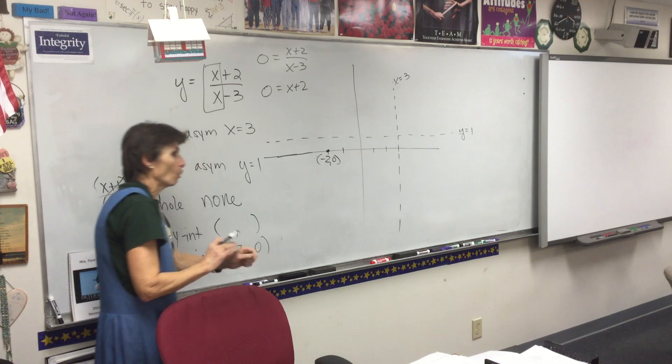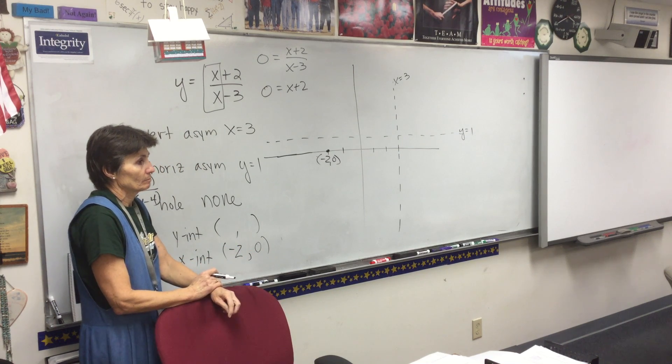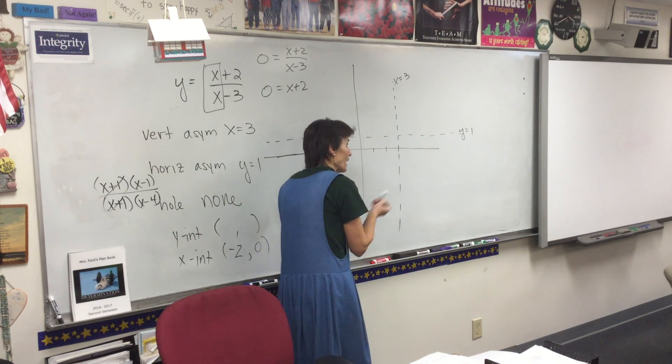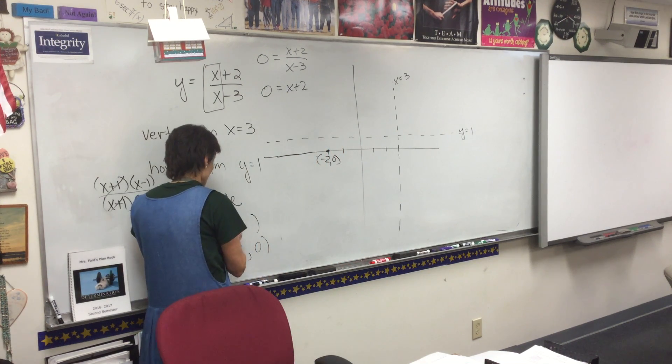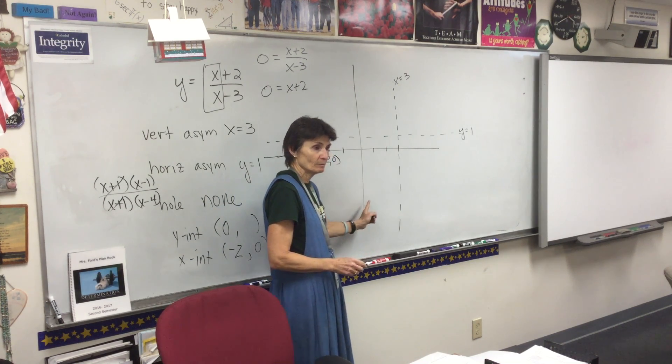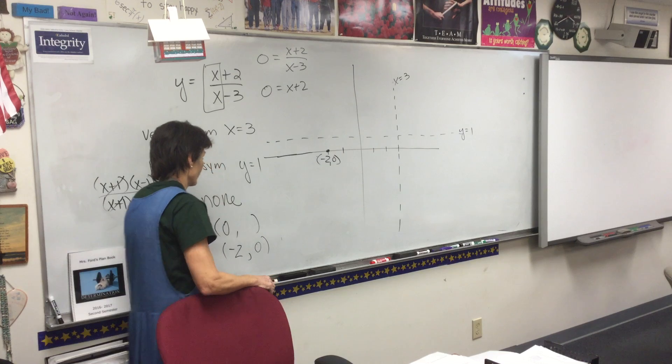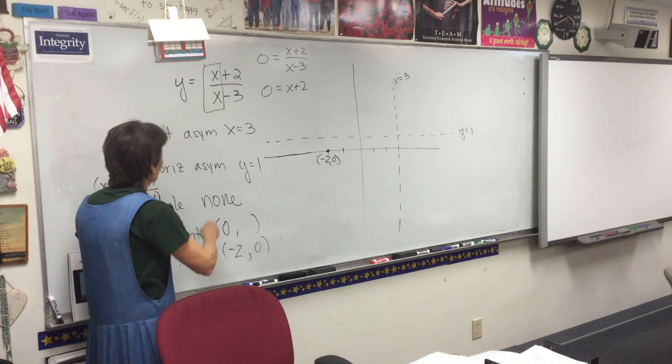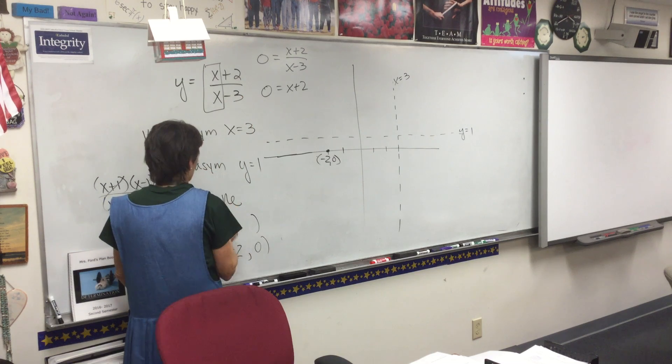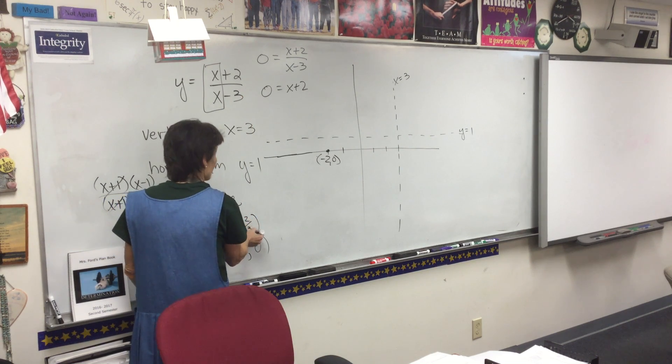How do we find a y-intercept? Well, you let x be zero. Sure. If you're on the y-axis, isn't your x going to be zero? So now I'll plug zero into my equation, and what do I get if I put in zero? Negative two-thirds.